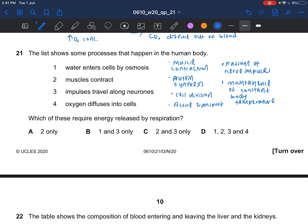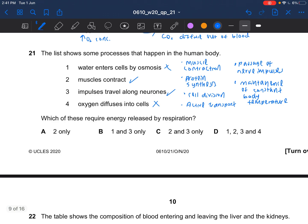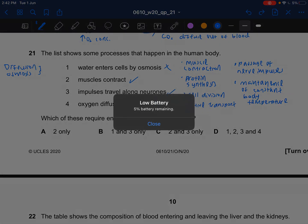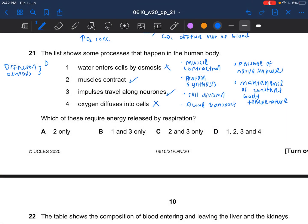So back to the question. We do not need energy for water to enter cells by osmosis. We need energy for muscle to contract. We need energy for impulse to travel along neurons. We don't need energy for diffusion into cells. Diffusion and osmosis, they are both passive transport. They don't require energy. So the answer would be 2 and 3 which is C.